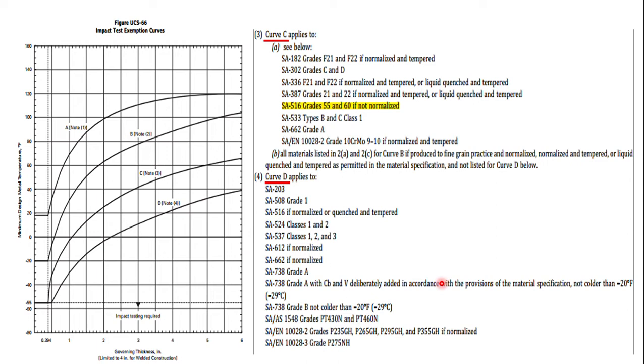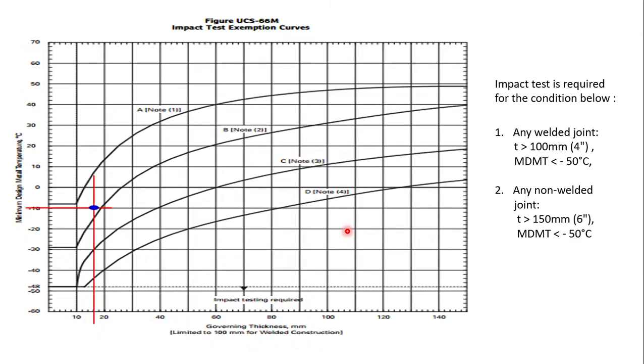So for material SA 516 Grade 64, it falls under curve B no matter what grade it is. If let's say your material falls under curve B and with the governing thickness 16 mm and MDMT is minus 10 degree Celsius, then you can skip the impact test.